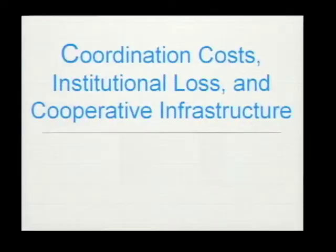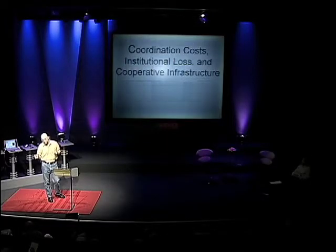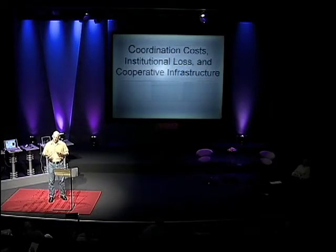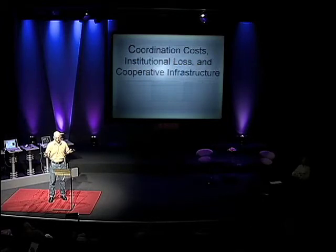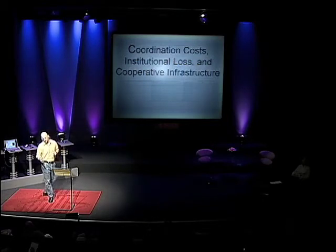How do groups get anything done? How do you organize a group of individuals so that the output of the group is something coherent and of lasting value instead of just being chaos? The economic framing of that problem is called coordination costs. A coordination cost is essentially all of the financial or institutional difficulties in arranging group output.